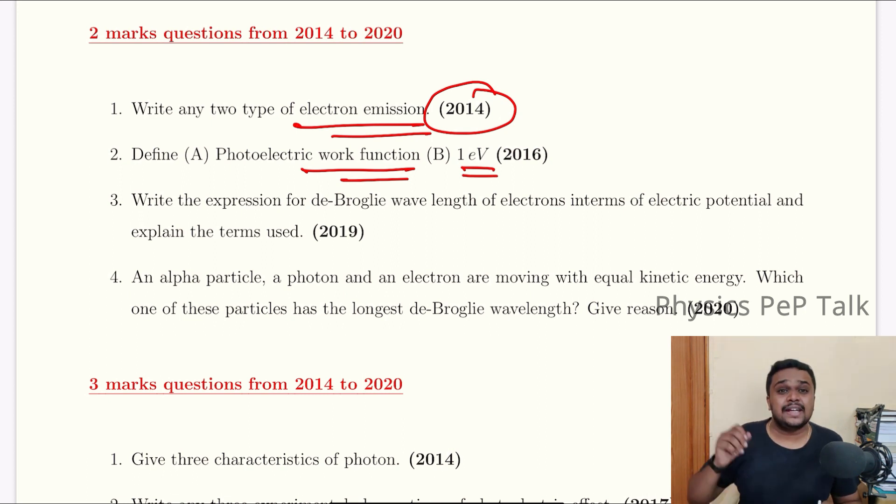Define one electron volt. It is the energy acquired by an electron when it is accelerated by a potential of one volt. One electron volt is equal to 1.602 into 10 power minus 19 joules.